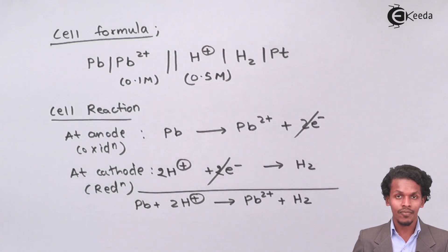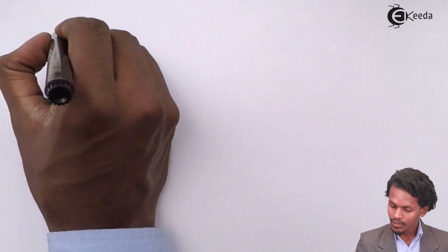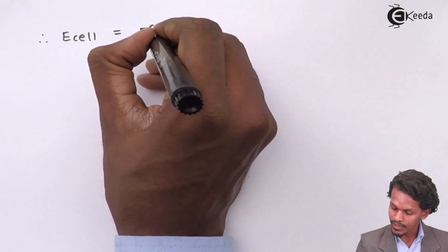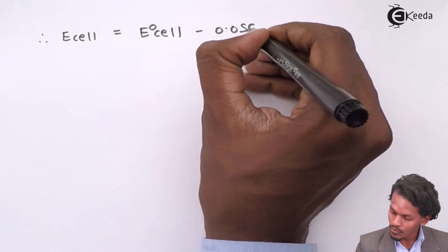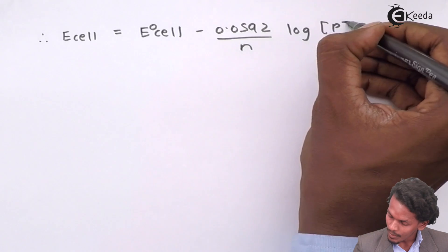The total number of electrons in the half-cell reaction is 2. Therefore, E cell equals E° cell minus 0.0592 divided by n, log of products divided by reactants.